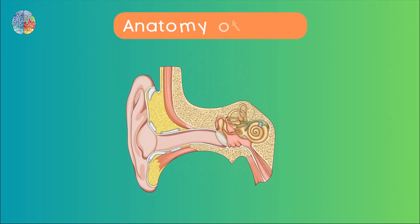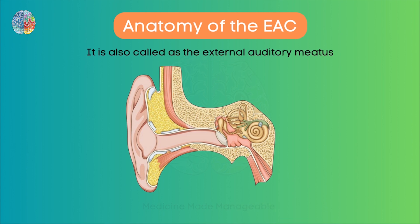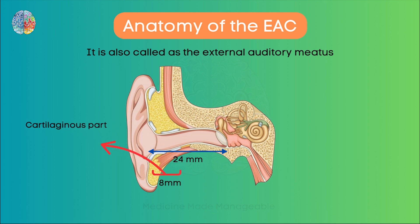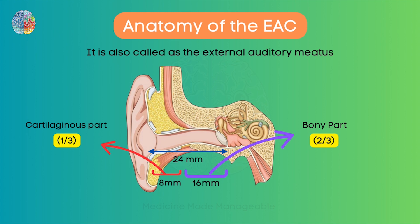The external auditory canal, or EAC for short, is also called the external auditory meatus. The length of the EAC is about 24mm and this is divided into 2 parts. The lateral 8mm is the cartilaginous part and the medial 16mm is the bony part. So the lateral one-third is the cartilaginous part and the medial two-thirds is the bony part.